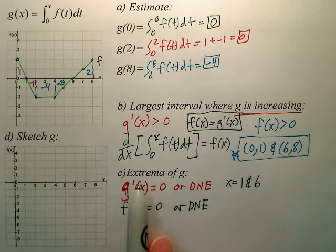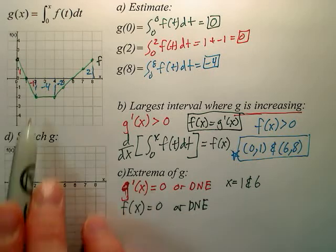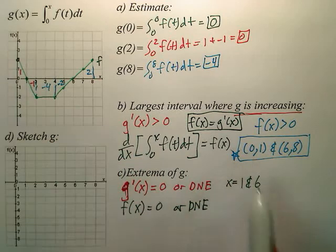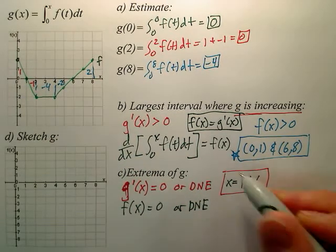Now, to verify their extremas, we have to make sure they change from positive to negative or negative to positive. And both of these change signs. This one goes from negative to positive. This goes from positive to negative. So these are your two extremas.